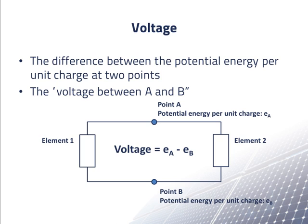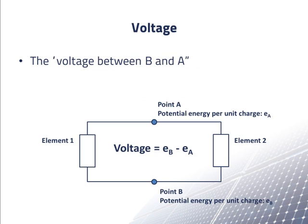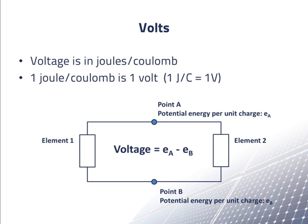The voltage between A and B is the potential energy per Coulomb at A relative to the potential energy per Coulomb at B. We show this on a circuit diagram by putting a plus sign at A and a minus sign at B. The voltage at B relative to A is the negative of the voltage at A relative to B. Since potential energy is measured in joules and charge is measured in coulombs, the unit of voltage is joules per Coulomb. A joule per Coulomb is also called a volt.